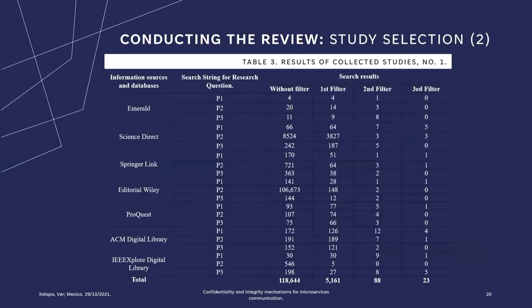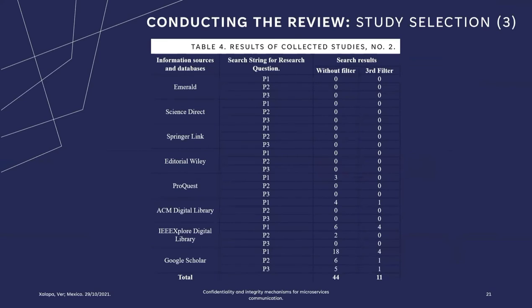Table 3 shows the process for the first collection of studies, where it is observed that the total number of selected studies is 23. However, six studies were discarded due to their weak relationship to any of the research questions. Table 4 shows the process for the second collection of studies. The format of the table varies slightly, since it was not possible to determine the exact frequency of the first and second filters, because the search was performed with the same strings but combining the keywords.